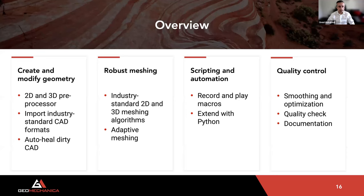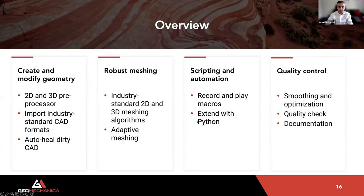At the core, Irasu Creator handles four main tasks. First, creating and modifying geometry — the software has a 2D and 3D pre-processor that lets you draw or import geometry from industry standard CAD formats, and it can auto-heal dirty CAD during import. Second, robust meshing with industry-standard 2D and 3D meshing algorithms allowing adaptive or user-input-based meshing. Third, scripting and automation tools — including macro recording, playback, and Python extension. Fourth, quality control with smoothing, optimization techniques, and quality metric checks. The software also ships with in-depth documentation.